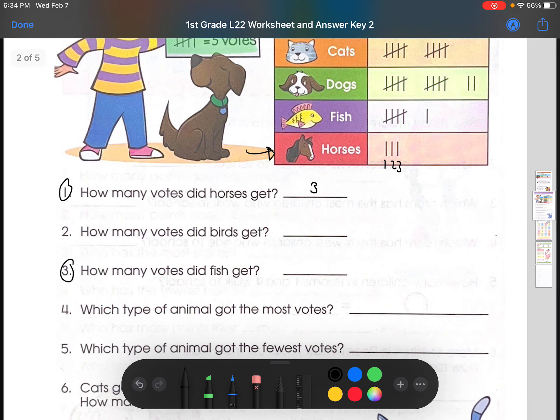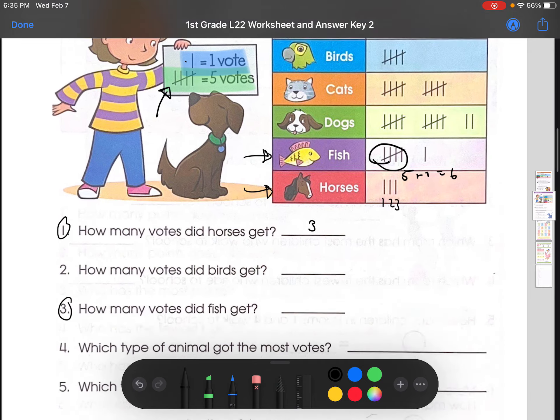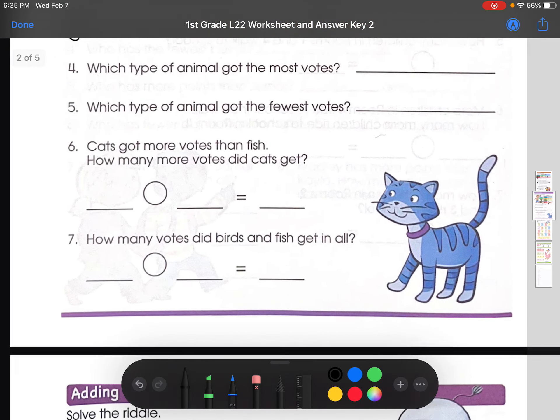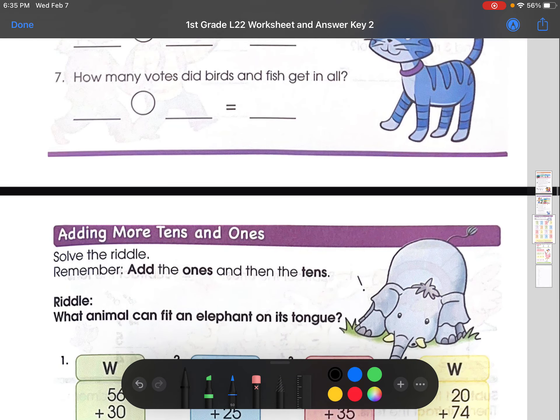How many votes did fish get? So first we find fish right here. Then we count. So we know that, according to this key, this is 5. So this is 5. And this is plus 1, which is 6. So the answer to number 3 would be 6. So let's move on, actually, because there aren't that many questions.